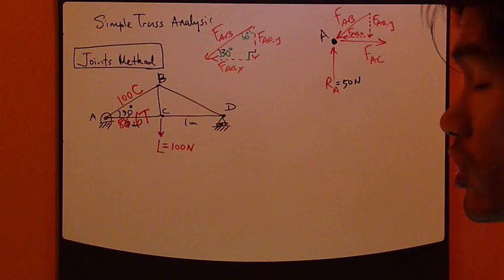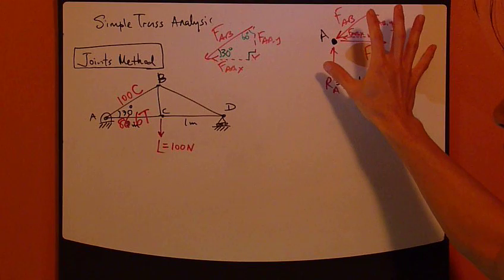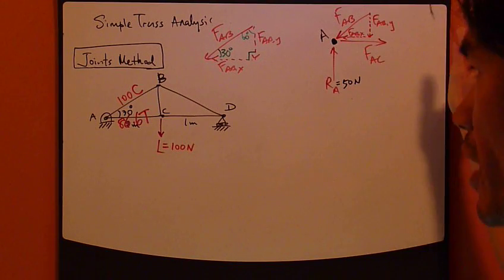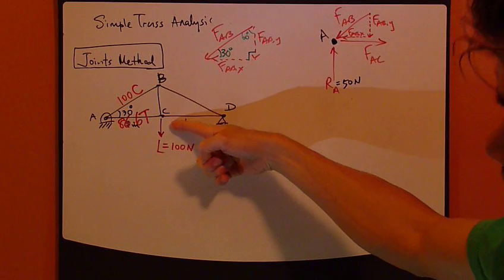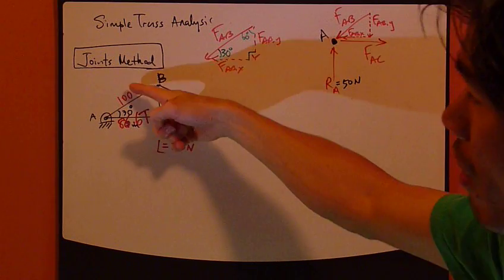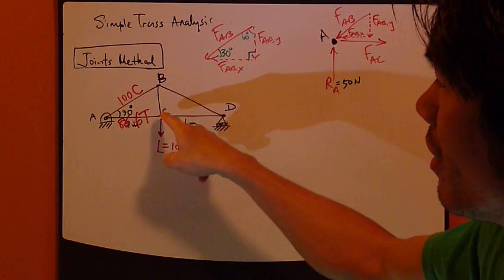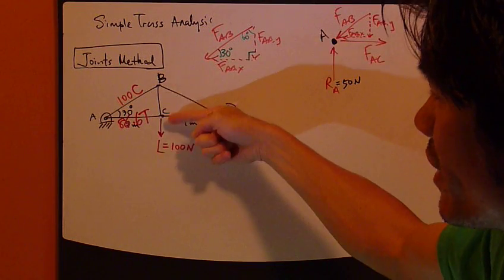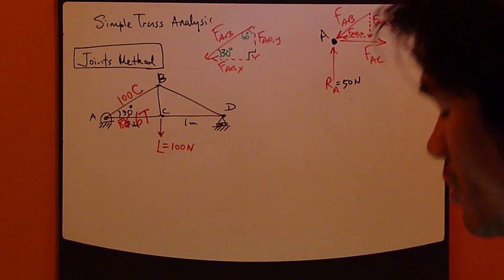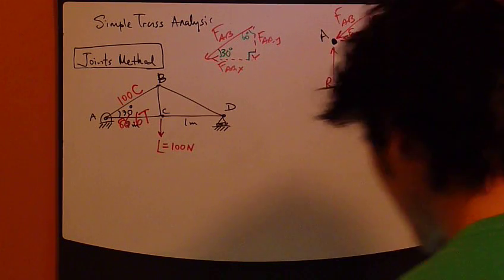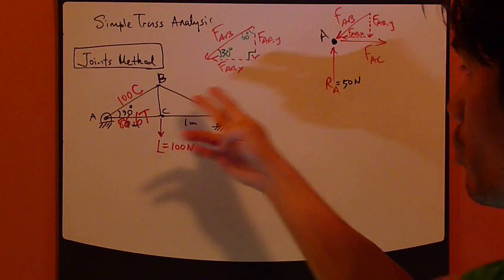The question is which joint should you go to? Now I've done joint A. The next joint should be either joint B or joint C, because I've solved for these two forces and these two members are attached to either joint B or joint C. And with these two being known, that should help me in the analysis to try to find out the rest of the unknowns.